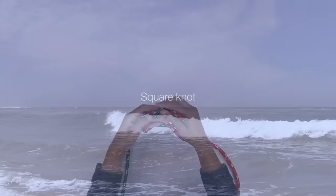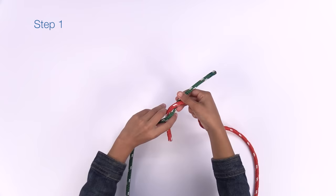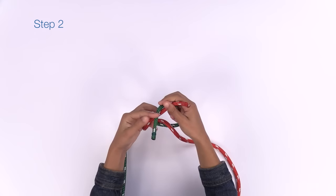Now let's learn the square knot. It ties two ropes together. There are four steps to tying this knot. First, cross the rope on the right over the one on the left. Tuck it under and bring both hands up.